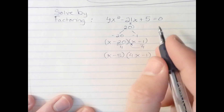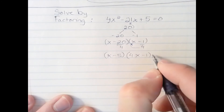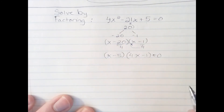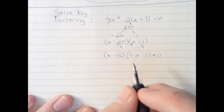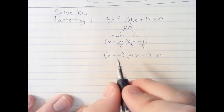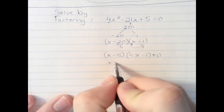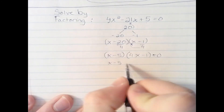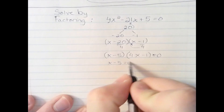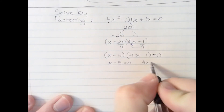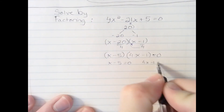But keep in mind this was an equation, still equal to 0. So I have to solve this by setting each of these factors equal to 0: x minus 5 equals 0, and 4x minus 1 equals 0.